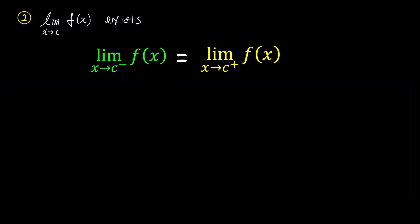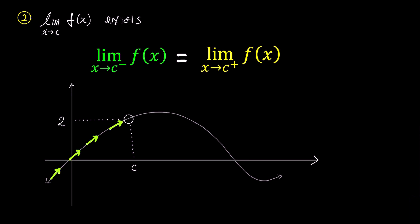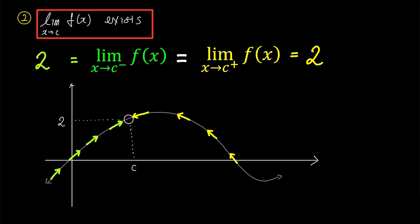Let's look at the graph together. When x approaches c from the left, the value of f approaches 2. You don't need to worry about the presence of the hole at x equals c because we are not substituting c into x, but rather approaching it closely. Whether the circle is solid or empty doesn't matter in this case. When x approaches c from the right, f also converges to 2. Both the left-hand limit and the right-hand limit equal 2, indicating the existence of the limit of f.